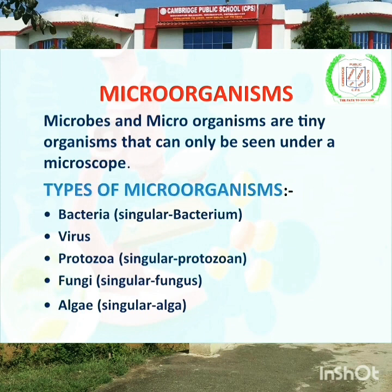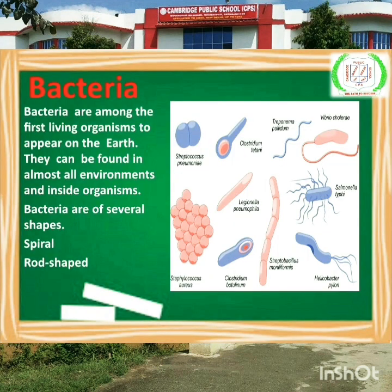Types of microorganisms. There are 5 types of microorganisms. First, bacteria. Second, virus. Third, protozoa. Fourth, fungi. And fifth, alga. Now we will read one by one about all types of microorganisms.